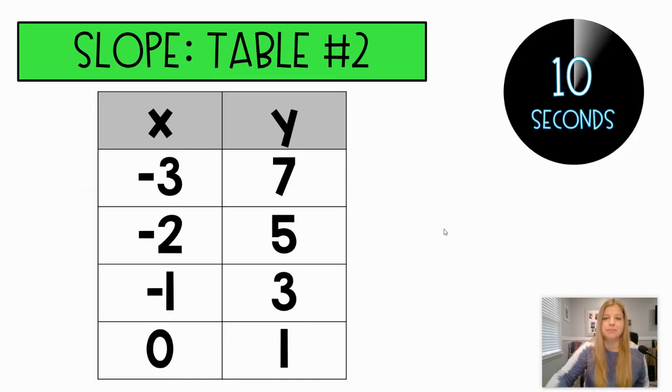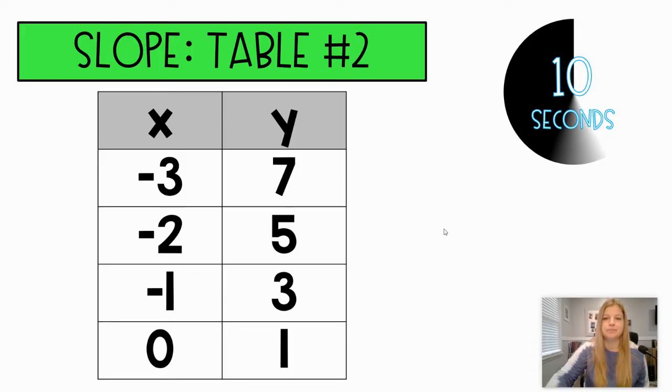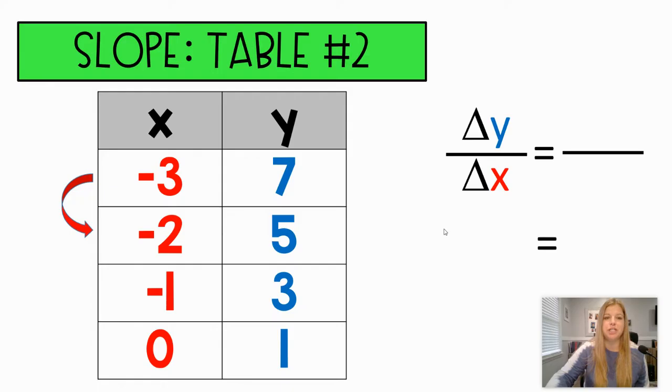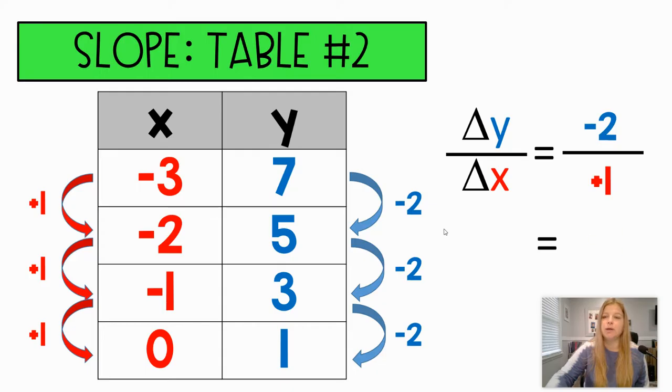Next one. Okay, so the change in x was adding by one. The change in y was subtracting by two, which means it's negative two over one, which is just simply negative two. Next one.